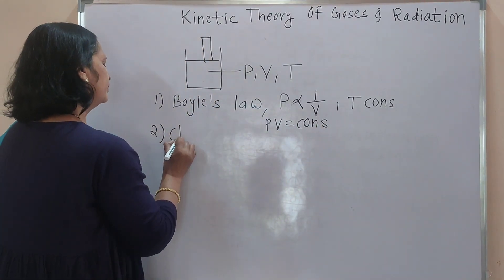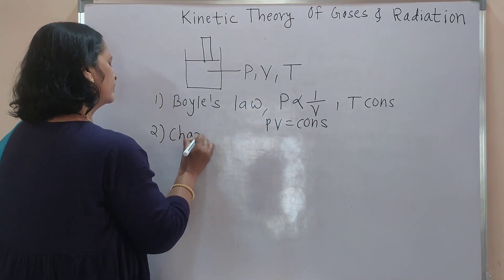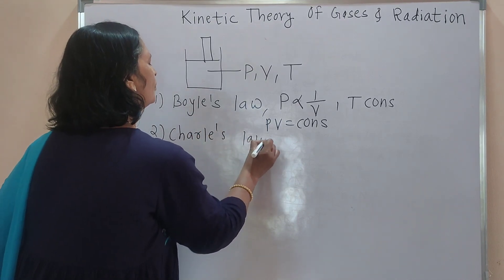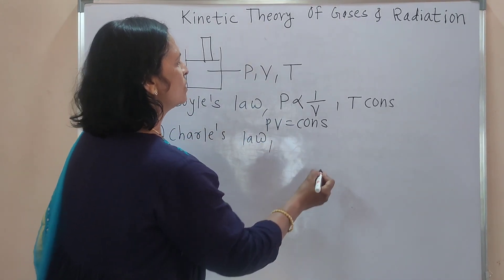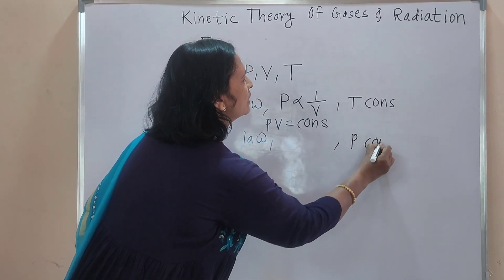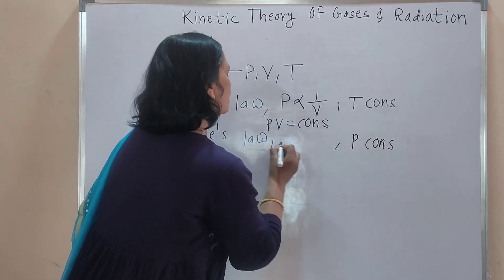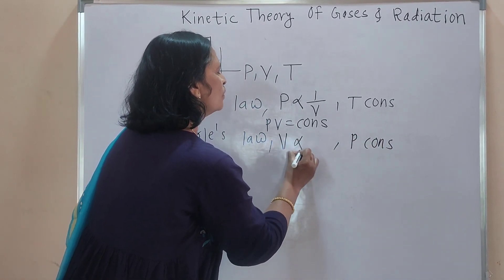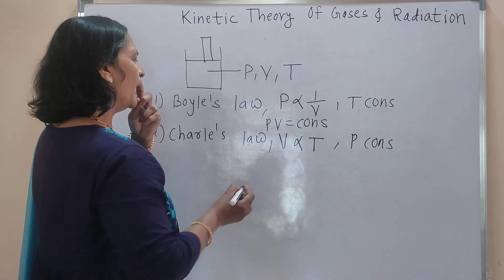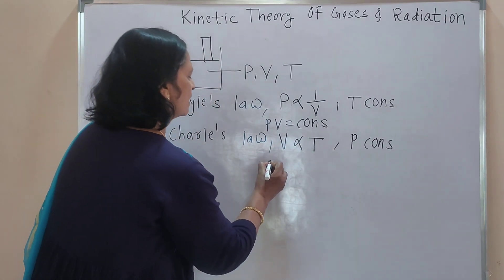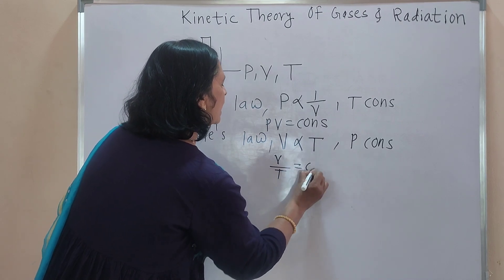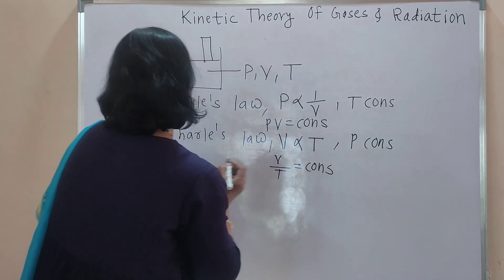The second law is Charles' law. In that law, when pressure remains constant, the volume of a given mass of a gas is directly proportional to the absolute temperature. That is nothing but V divided by T equals constant.